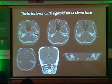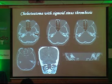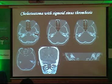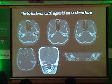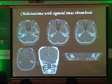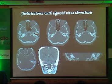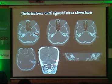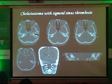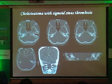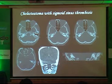Neural sinus thrombosis is again pretty common in case of CSOM, and you see this empty delta sign. When you give contrast, the thrombosed part of the sinus does not enhance. The contralateral side is enhancing, while the ipsilateral side shows thrombosis — called the empty delta sign because it looks like a triangle which is empty.